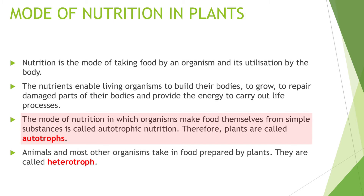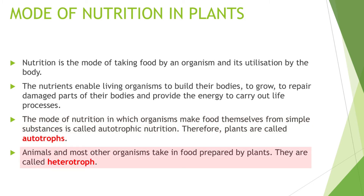Other living organisms like animals and human beings take food from plants, because they depend on plants directly or indirectly. Both types of animals and most other organisms take in food prepared by plants, and they are called heterotrophs.